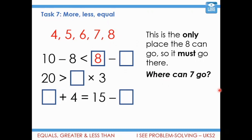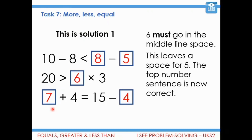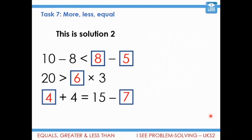Similarly, where can the 7 go? 8 − 7 = 1 which is less than 2, so 7 can't go there. The 7 could go in either place in the bottom box: 7 + 4 = 15 − 4, both sides 11. Or 15 − 7 = 4 + 4. Then the 6 must go in the middle line space, and the 5 goes in the top box — that combination works. We couldn't put 6 up top because 8 + 6 ≠ 2. That uncovers solution 1, and solution 2 has the 7 and 4 the other way around.